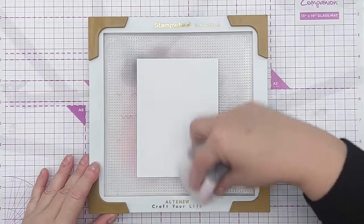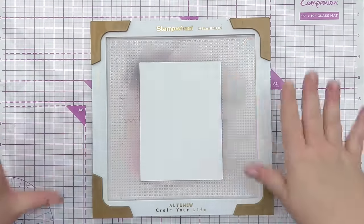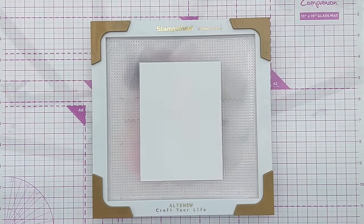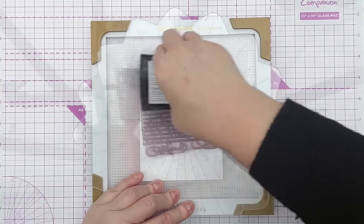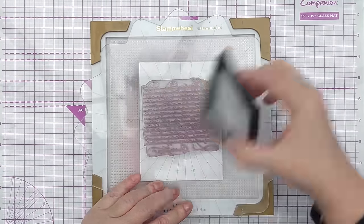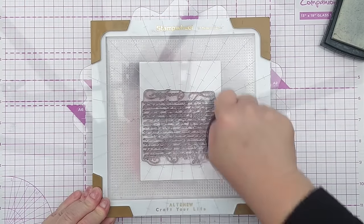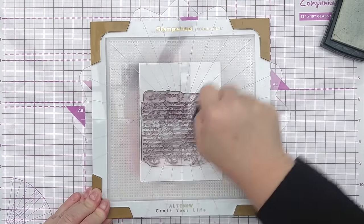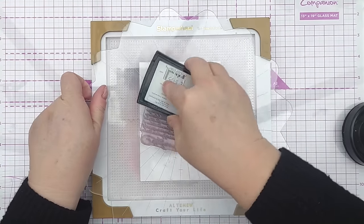I'm going to do some heat embossing so I shall just anti-static and anti-grease my paper and then we'll stamp with some embossing ink and press it down, and I'm going to do that again just to get a really good impression.